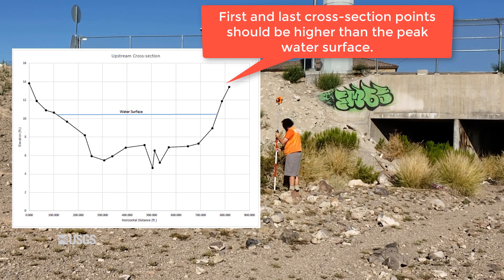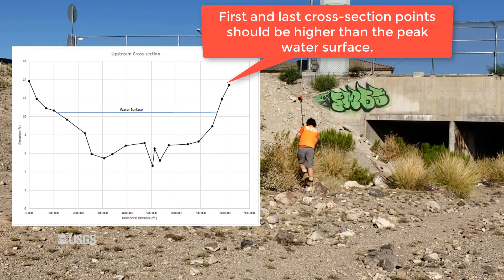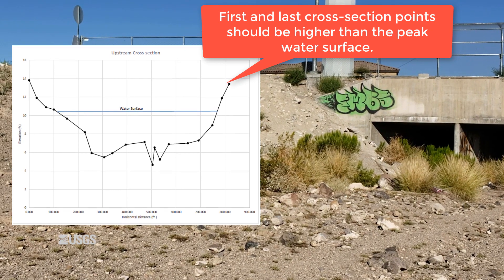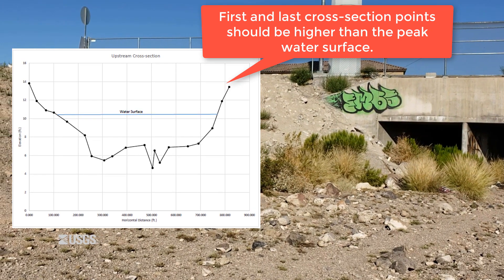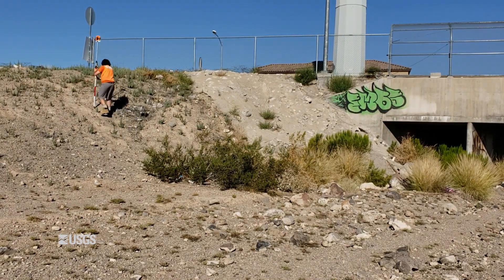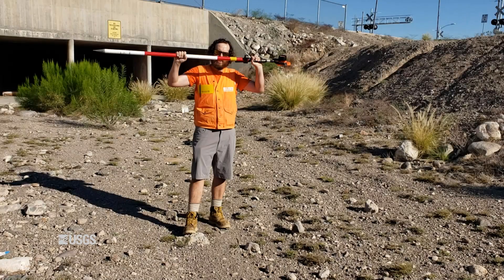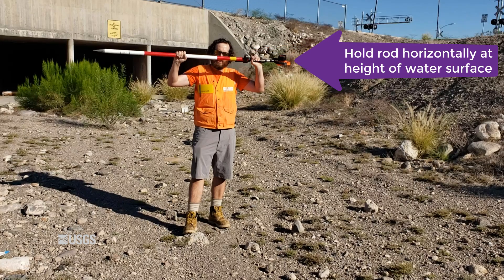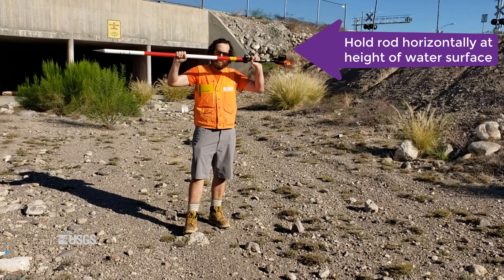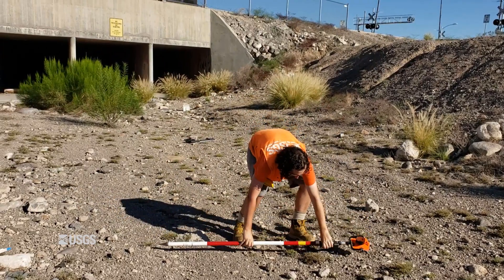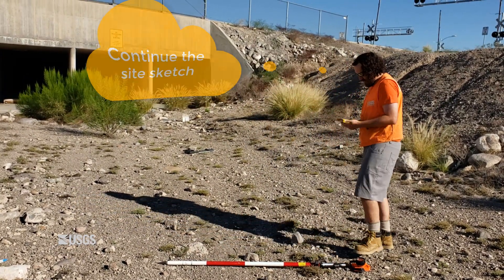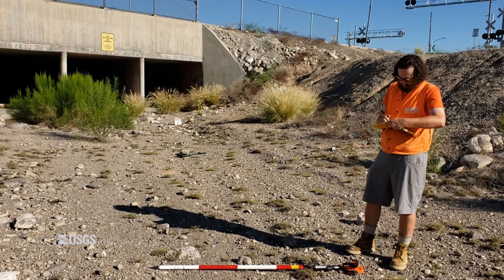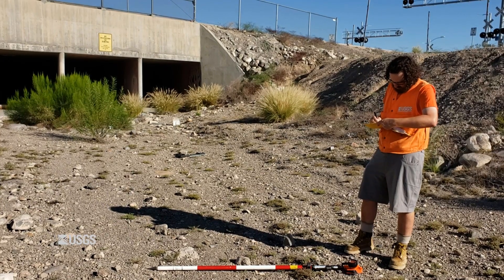Make sure your first and last cross-section points were above the water surface during the peak. If you have really good marks this may be obvious, but when marks are poor, it is always better to go a little higher just to make sure you end up above the final water surface. Finally, don't forget to take pictures of the approach. The rod person holding the rod horizontally at the height of the water surface from both sides is quite useful. I like to continue my site sketch and make any important notes about the approach cross-section. I will also estimate a roughness value for the approach.